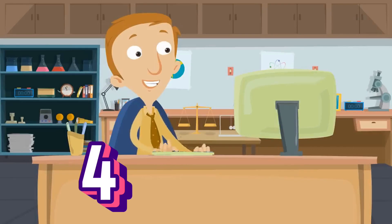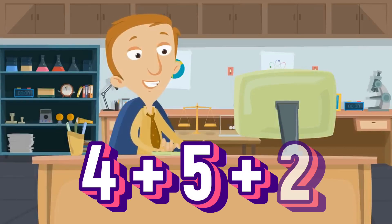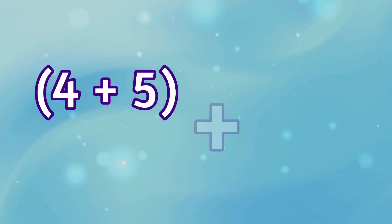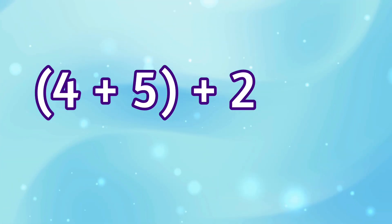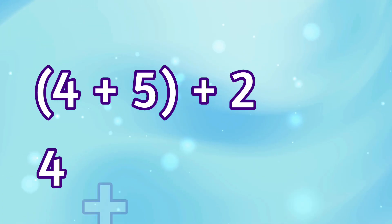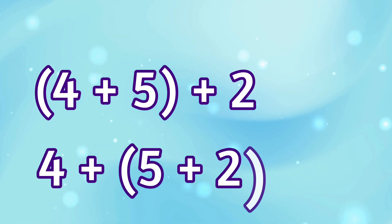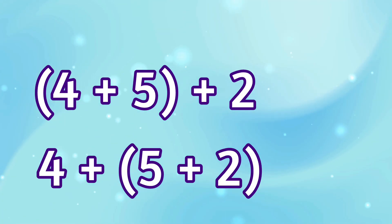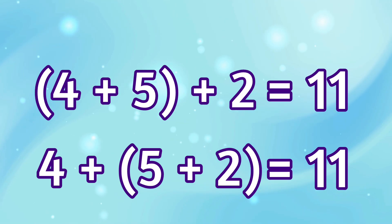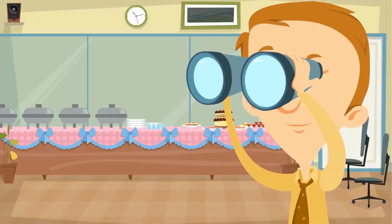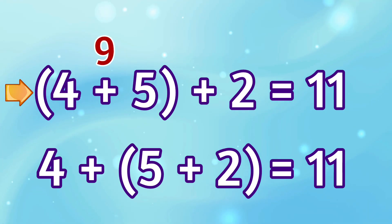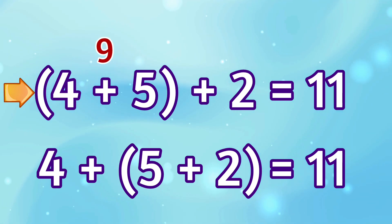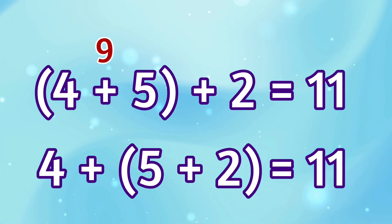Let's look at another one. Now we're adding 4 plus 5 plus 2. We can group the 4 and the 5: (4 plus 5) plus 2. Or we can group the 5 and the 2: 4 plus (5 plus 2). Either way, the answer is 11. Let's check: 4 plus 5 equals 9, and 9 plus 2 equals 11.